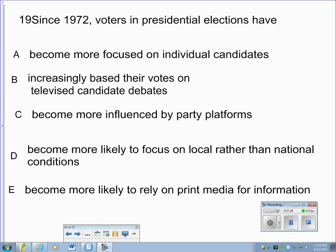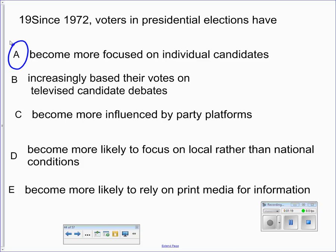A question from the AP Exam a few years back: Since 1972, voters in presidential elections have done what? The correct answer is they have become more focused on the individual candidates. This is the idea of a candidate-centered campaign as opposed to a party- or issue-centered campaign — the focus is more on candidates and less on parties.